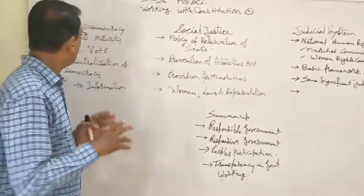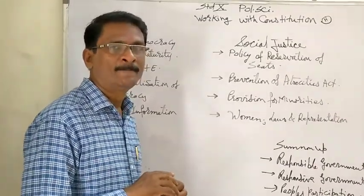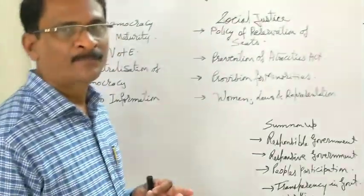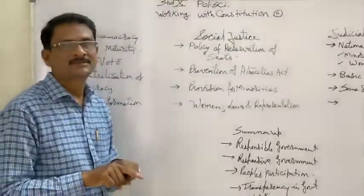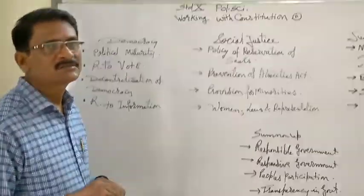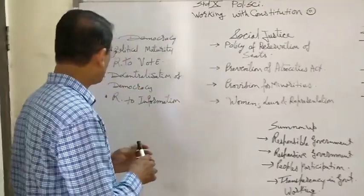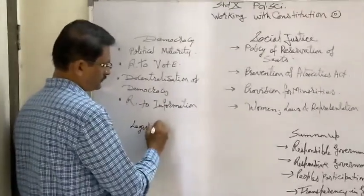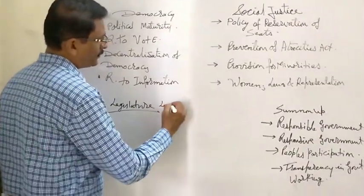We saw that Indian democracy is particularly related to the representative form of government. The parliamentary setup is such that people choose their own representatives. The constituency through which elected members move to Parliament or State Assembly are the people representing the constituency as legislature. This legislature is a lawmaking body.